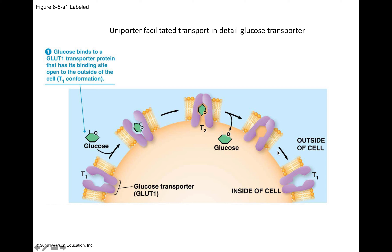In many types of channels there is a clamshell-sort of conformational change that does the facilitation. Glucose binds to a binding site facing the outside of the cell. Once it binds, that induces a conformational change in the protein so the clam is now facing the inside of the cell, and then the glucose diffuses away. Once it's facing the inside without glucose bound, it reverts to its original shape. That's one way you can get a big hydrophilic molecule across the membrane — using this clamshell conformational change.